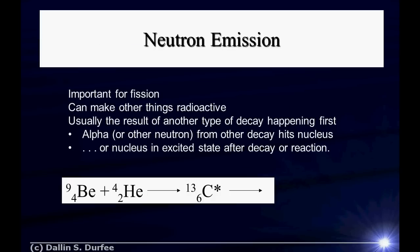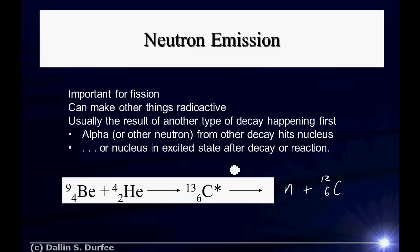Neutron emission is important for fission — these neutrons flying out of stuff bump into other nuclei, and that's what causes the chain reaction in fission. Neutron emission is also important because neutrons can make other things radioactive. If you have neutron emission going on, you may have perfectly happy non-radioactive nuclei that become radioactive when they capture these neutrons. Neutron emission is usually a result of another type of decay happening first. So imagine some decay leaves the nucleus in an excited state, and it spits off some neutrons, or potentially it's the result of something bumping in and causing a reaction.